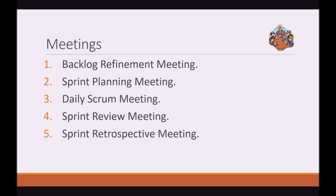Meetings. We have the backlog refinement meeting, the sprint planning meeting, a daily Scrum meeting, a sprint review meeting, and a sprint retrospective meeting. These may just be words right now, but as this training series goes on we're going to have a dedicated video for each one to fully explain what needs to happen in these meetings and what the point of each meeting is.